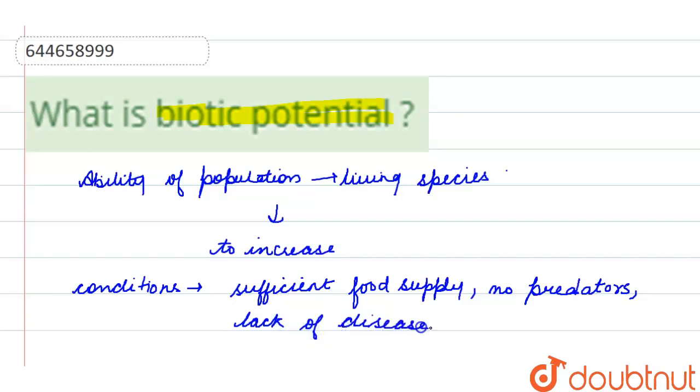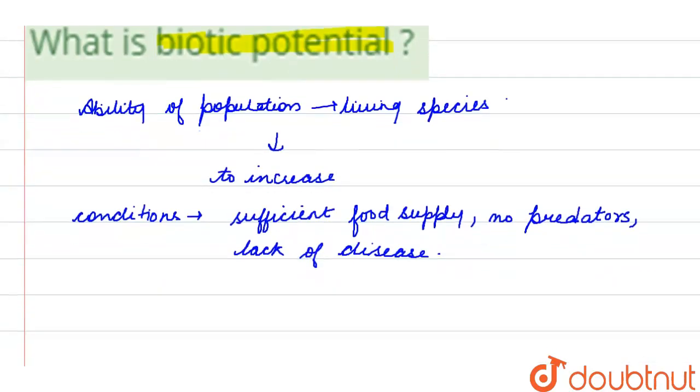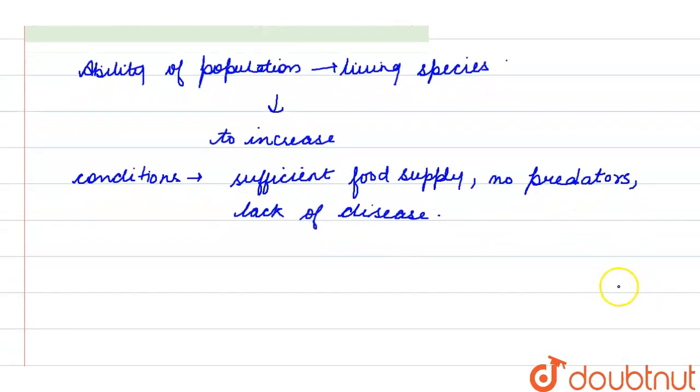Alright, so these are favorable or ideal environmental conditions under which the population of living species could increase. So primary determining factors for biotic potential...